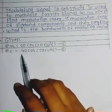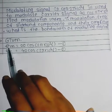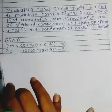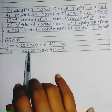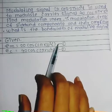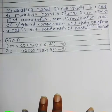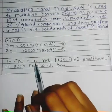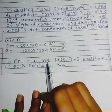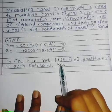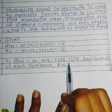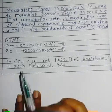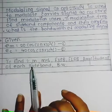First, we write the given equations. The modulating signal is 20 cos(2π × 10³t) and the carrier signal equation is 40 cos(2π × 10⁴t). We need to find: modulation index, percent of modulation, upper sideband frequency, lower sideband frequency, amplitude of each sideband, and bandwidth.